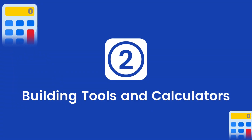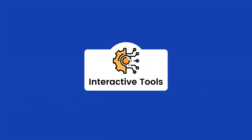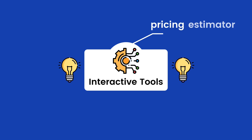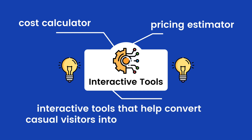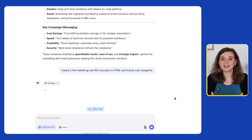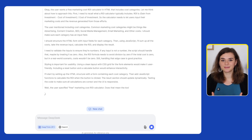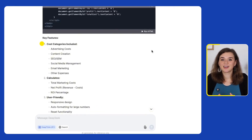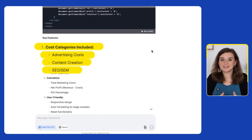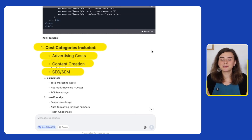Use case number two is building tools and calculators. People love interactive tools that give them instant actionable answers, whether it's a pricing estimator, a cost calculator, or another interactive tool that helps convert visitors into potential customers. So let's see how DeepSeek can handle this. I'll ask it to build a marketing cost ROI calculator. It recognizes common marketing costs like SEO, content creation, and advertising, and automatically creates the right fields formatted as numbers.